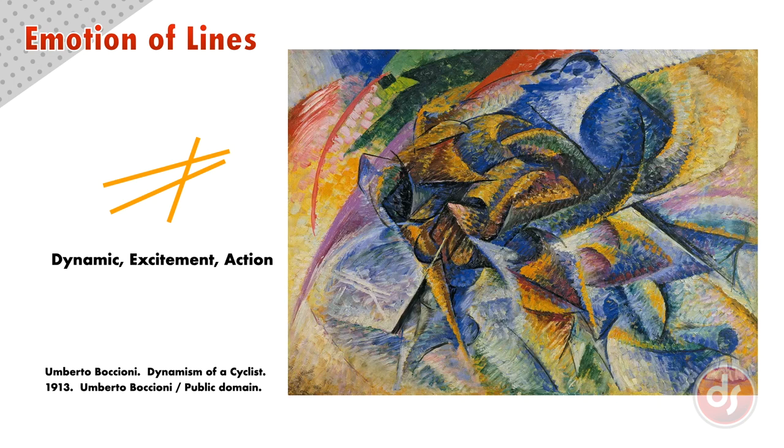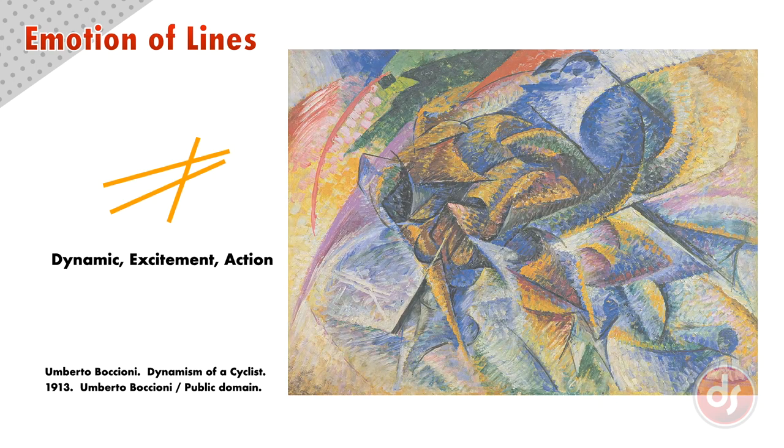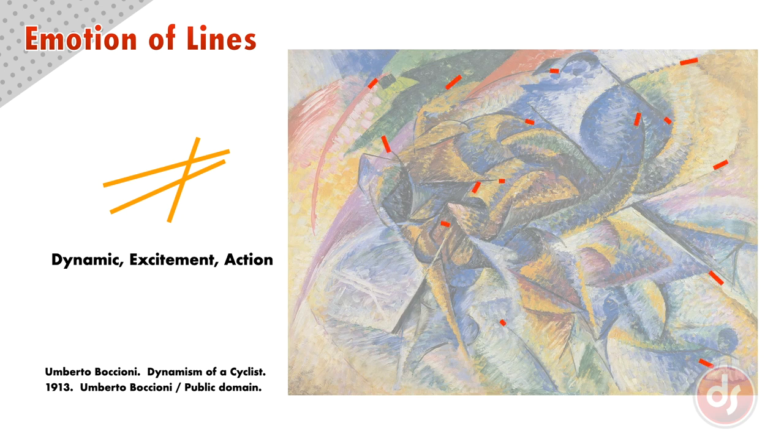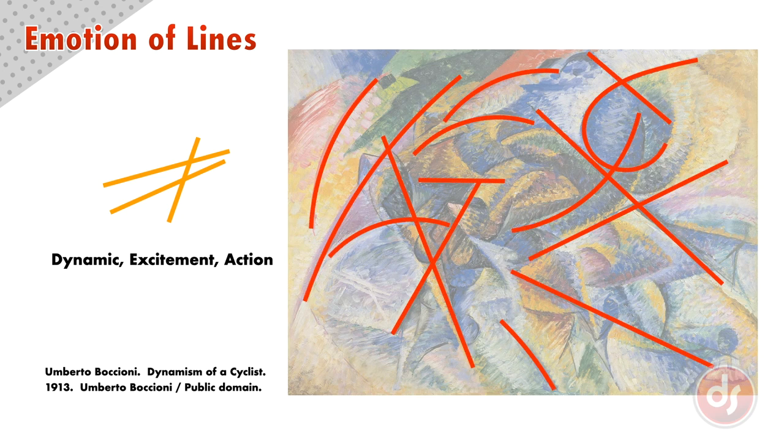Boccioni made work in the futurist movement that focused on the speed and technology of the early 20th century. He wanted to capture the dynamism of a cyclist in this work. He captures this action by building the figure out of a flurry of angled lines. This gives the abstracted cyclist the dynamic forward movement. He combined the diagonals with short angled curves to create a sense of wind and add to the movement.